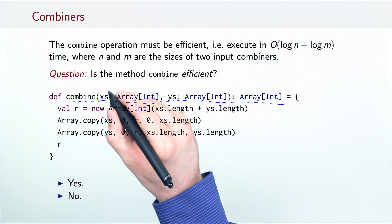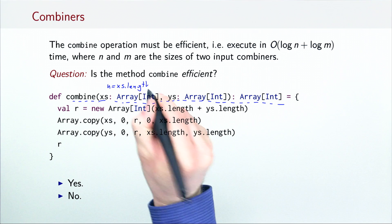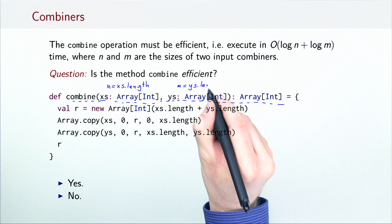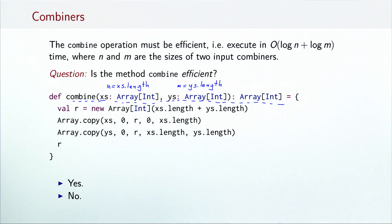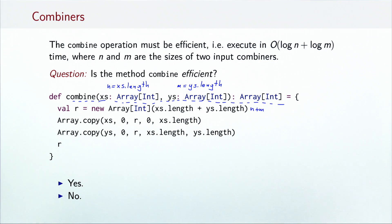If you answered no, you are correct. This method takes O(n + m) time, where n and m are the lengths of the two arrays. To show this, let's count the total number of steps in this method. The first line allocates the resulting array R, whose length must be n plus m, and this requires n plus m computational steps on the JVM runtime. Then, the contents of the arrays are copied to R with the array.copy calls, which again take n plus m steps. In total, that's 2n plus 2m computational steps.